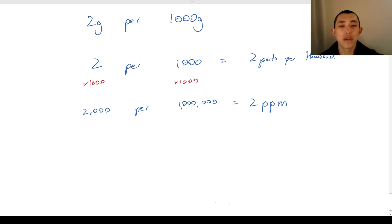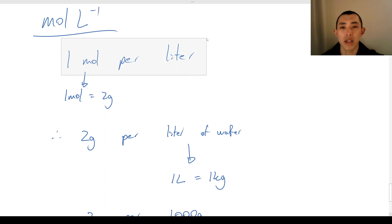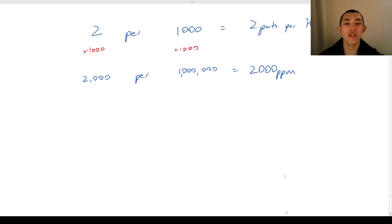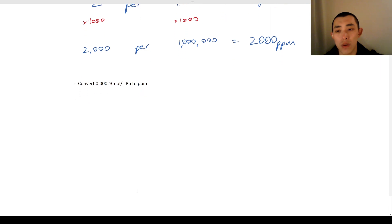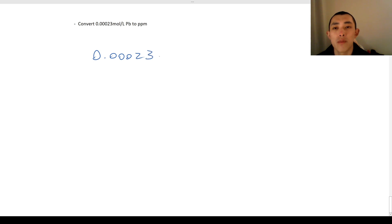So that was an example of how to convert between moles per liter and parts per million — and to clarify, the answer was 2,000 parts per million. Now let's use this with a real example. Let's say we're asked to convert 0.0023 moles per liter into parts per million. The first thing we do is write this out: it's moles of lead per 1 liter of water.